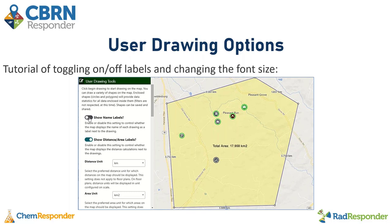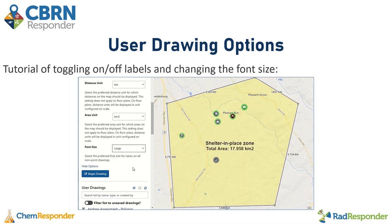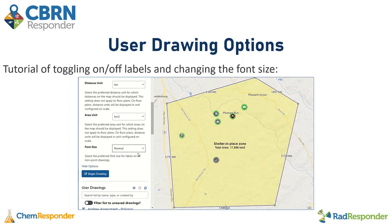Here, if I wanted to remove the name and distance labels, I can just toggle those off and there will be no distance labels around or in the shape. I can also change the font size to make it smaller or much larger, and then return it to normal size.